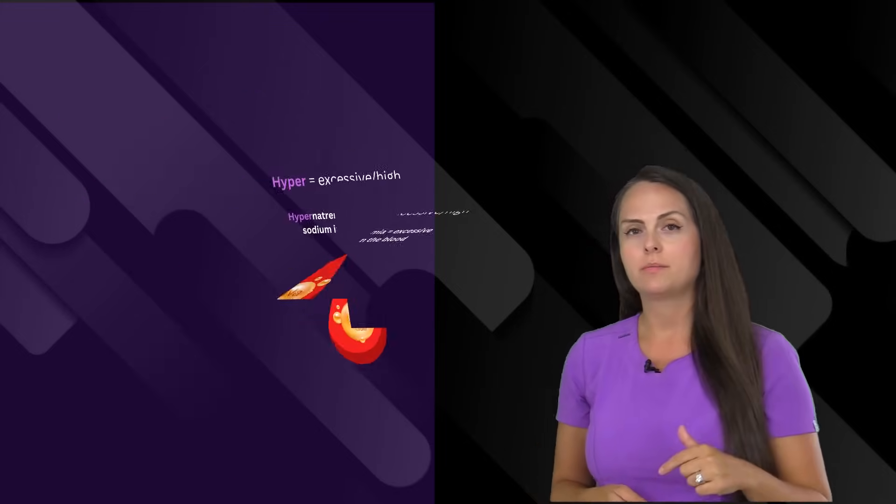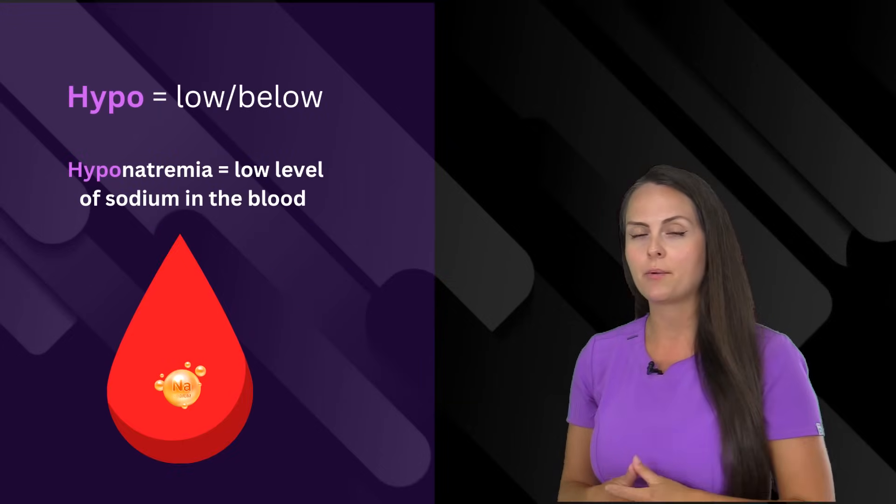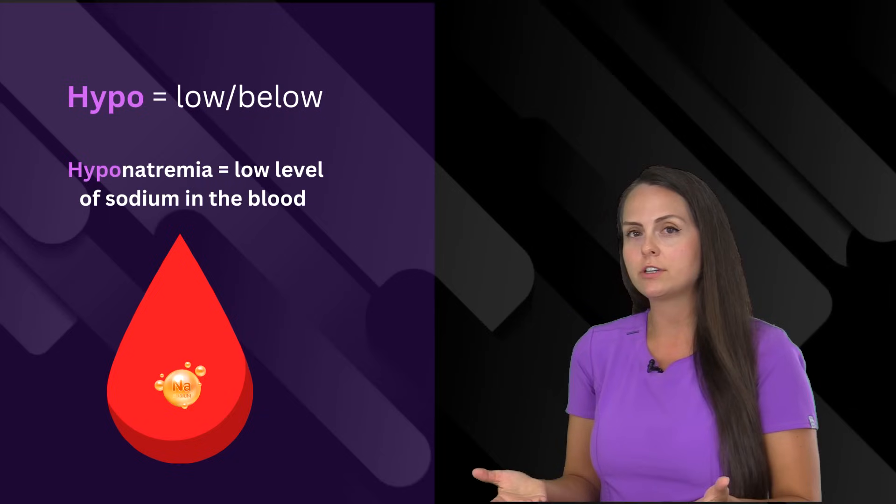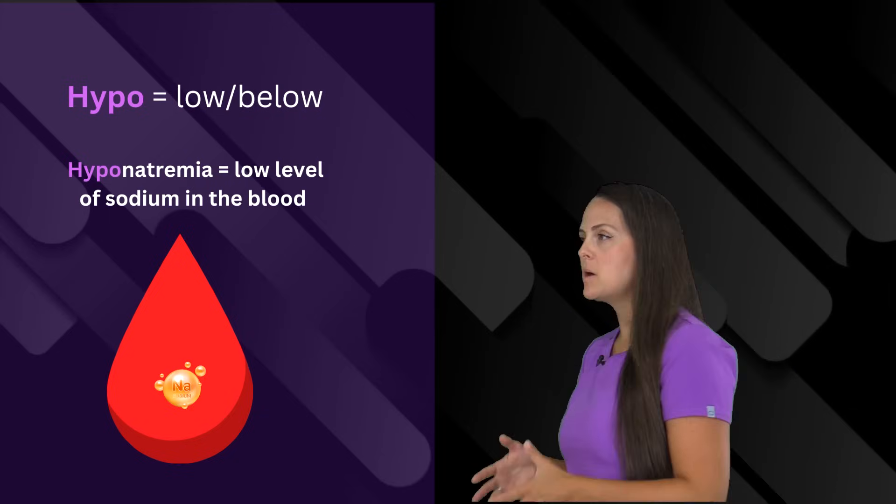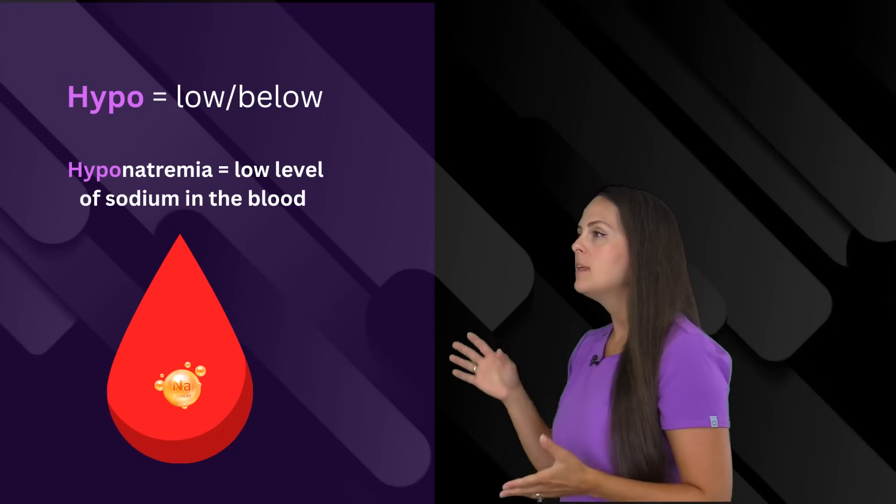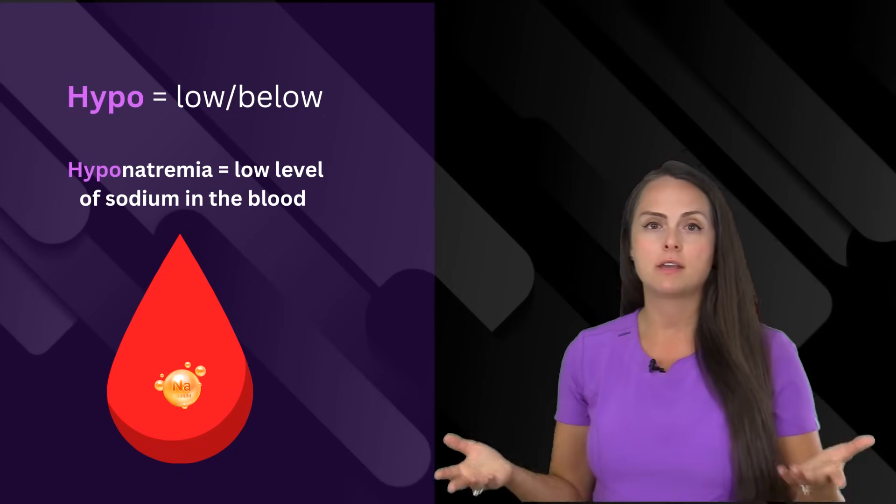Then we have an opposite prefix with this, which is hypo. This means low or below. So the opposite of a hypernatremia would be a hyponatremia. And this would mean that we have low amounts of sodium in the blood.